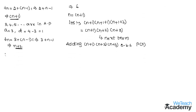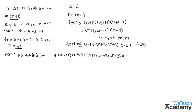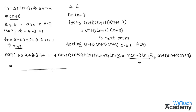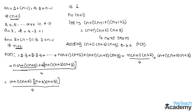By adding we get: 1×2×3 + 2×3×4 + ... + n(n+1)(n+2) + (n+1)(n+2)(n+3) = n(n+1)(n+2)(n+3)/4 + (n+1)(n+2)(n+3). Simplifying the RHS by taking 4 as LCM: [n(n+1)(n+2) + 4(n+1)(n+2)(n+3)] / 4. Taking (n+1)(n+2) as a common factor: (n+1)(n+2)[n + 4(n+3)] / 4, which gives (n+1)(n+2)(n+3)(n+4) / 4. This can be written as (n+1)(n+1+1)(n+1+2)(n+1+3) / 4.